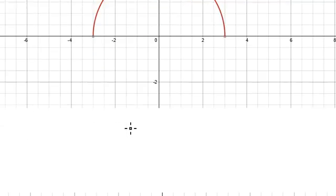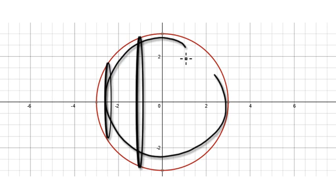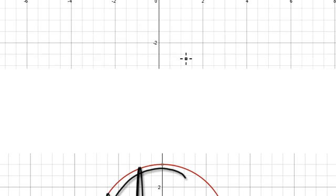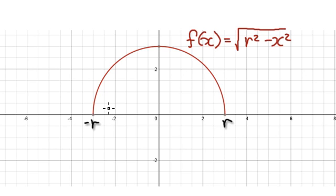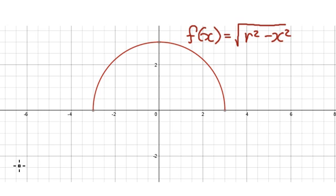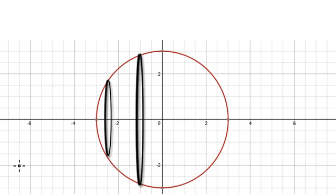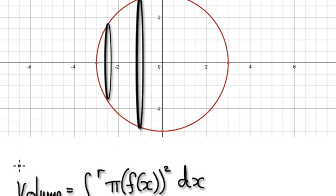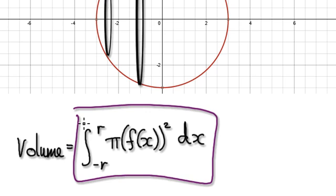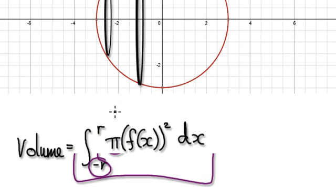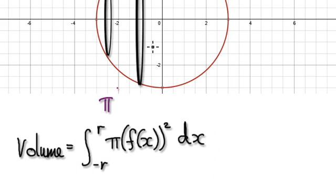Find the volume of the sphere. Don't forget this boundary here is r and this here is negative r. So come up with the volume of the sphere — press pause and have a go. To do this, you basically integrate from minus r to r of pi times the height squared.